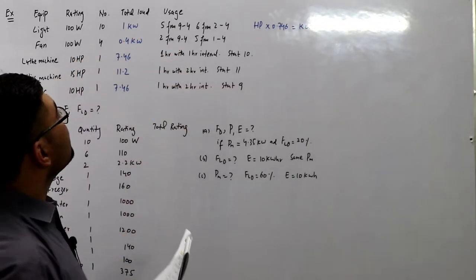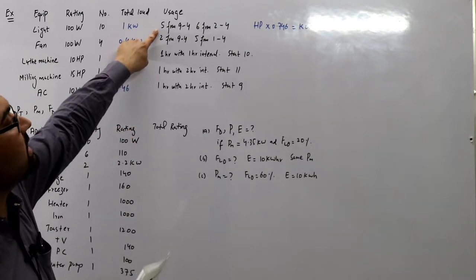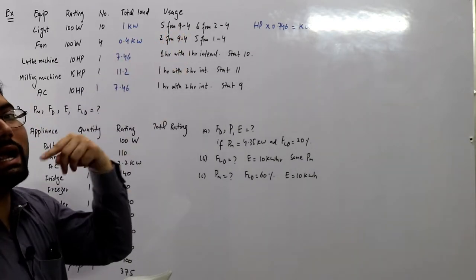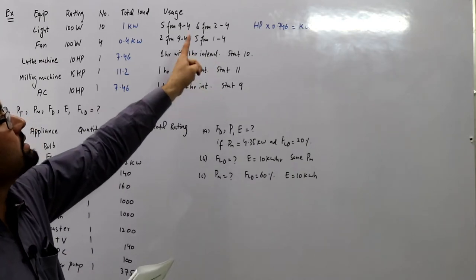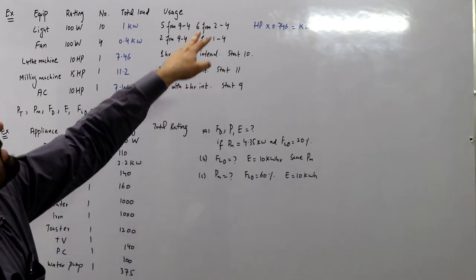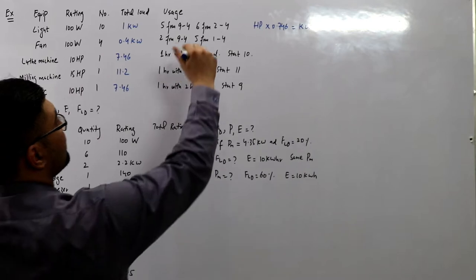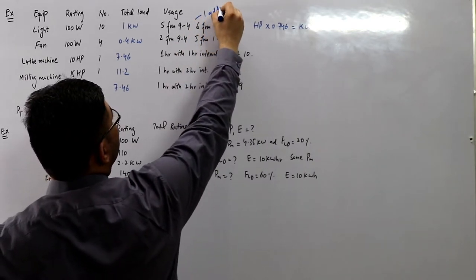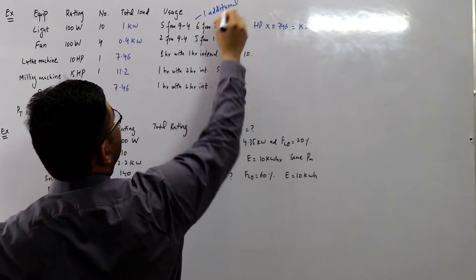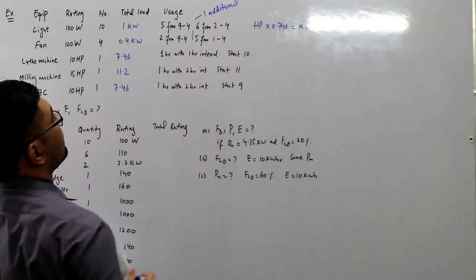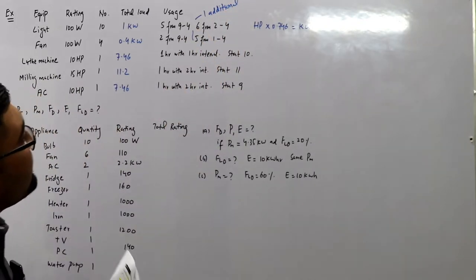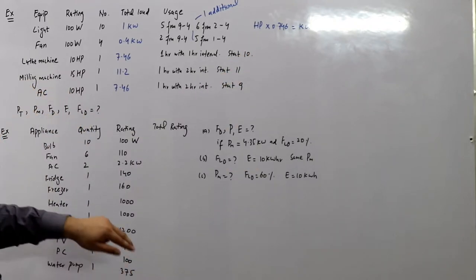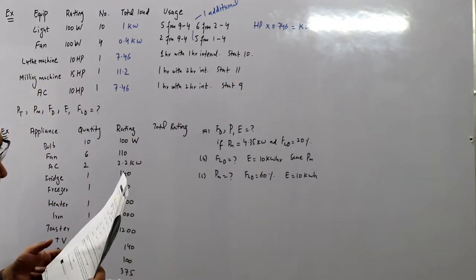The usage is given: five lights are on from 9 to 4 and one additional from 2 to 4, so you have six lights from 2 to 4. Similarly, one additional for fans. Two fans are operating from 9 to 4 with one additional from 9 to 4.